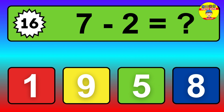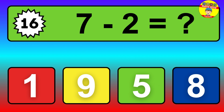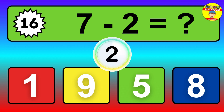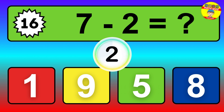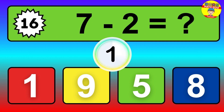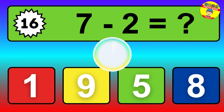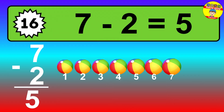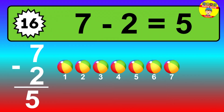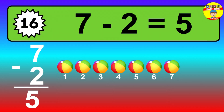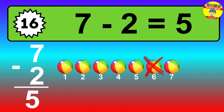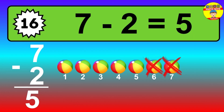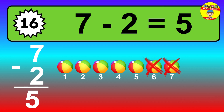Question 16. 7 minus 2 equals what? So the answer is 7 minus 2 is 5. Let's count it. 1, 2, 3, 4, 5.